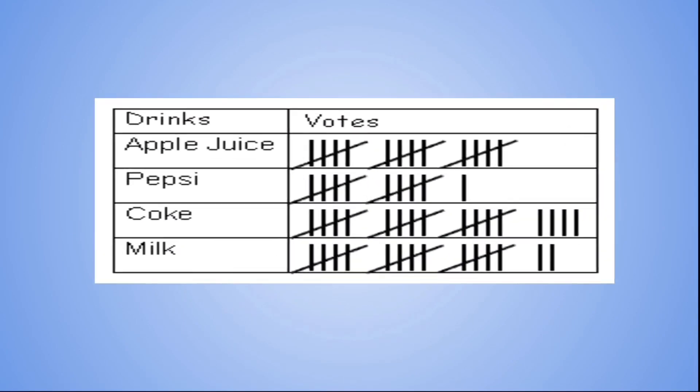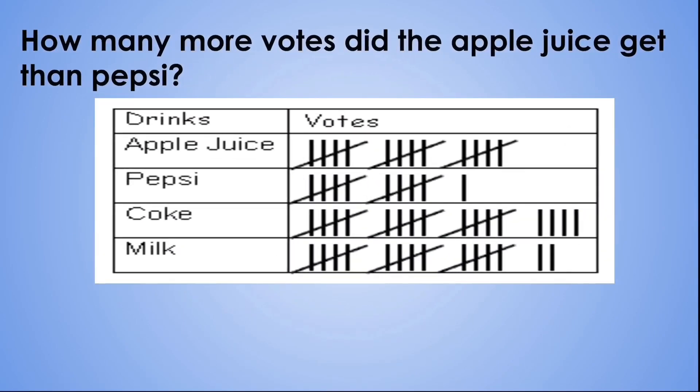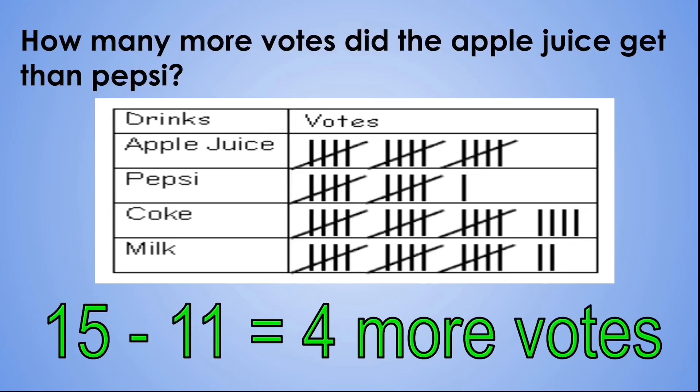And for our final question, how many more votes did apple juice get than Pepsi? Apple juice has 15 votes and Pepsi has 11 votes, so you will say 15 minus 11, which equals 4.